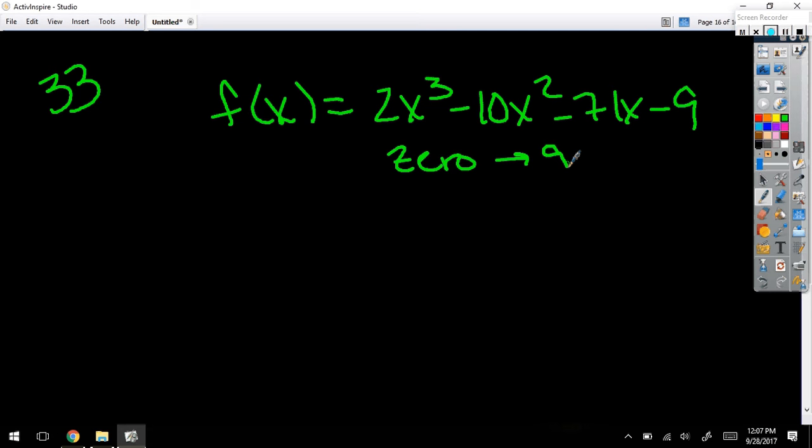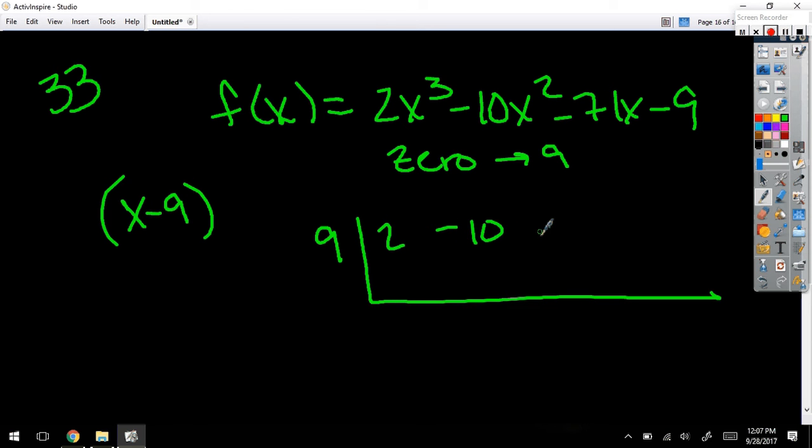That tells me that one of the factors is x minus 9. X minus a zero is a factor. So if I divide by 9: 2, -10, -71, and -9. Drop it, multiply it...